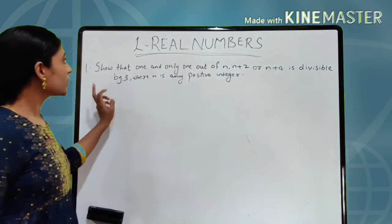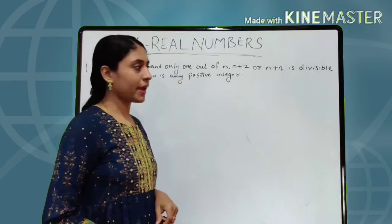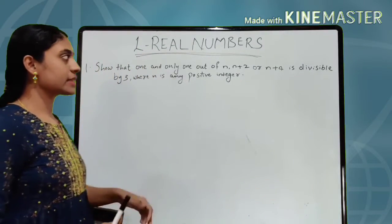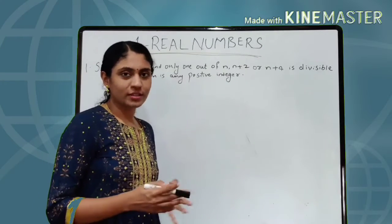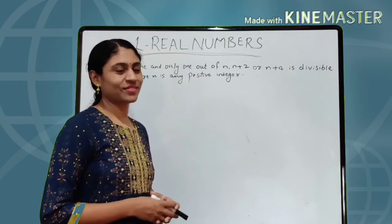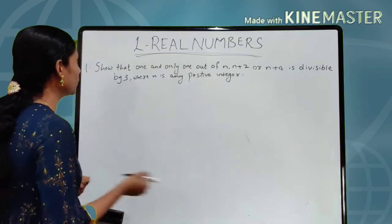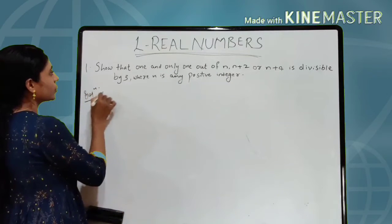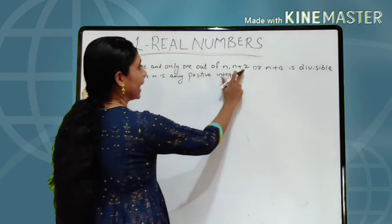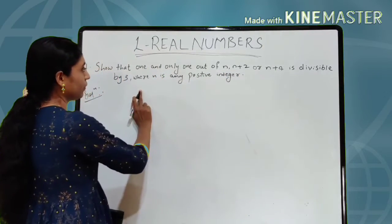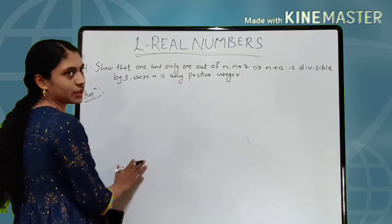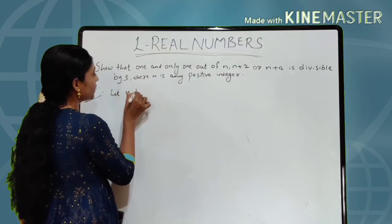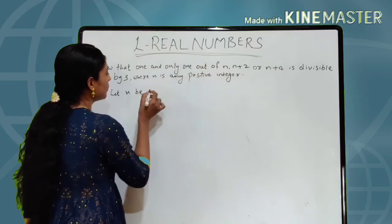The first question was: show that 1 naturally, 1 out of n, n plus 2, or n plus 4 is divisible by 3, where n is any positive integer. So we can write: let n be any positive integer, as it is given that n is any positive integer.